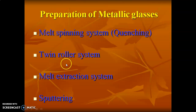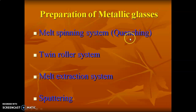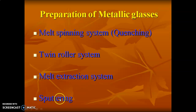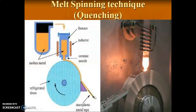The twin roller method places two rollers together — a bar is sent through the two rollers and made into a thin plate. Melt extraction is the extraction of the waste part from the twin roller process. Sputtering is nothing but combining materials together to form the metallic glass.